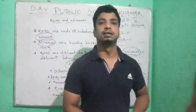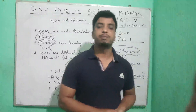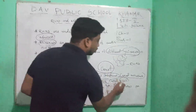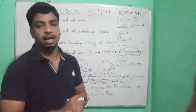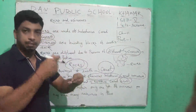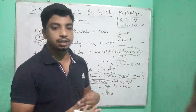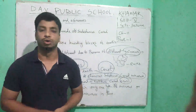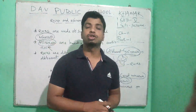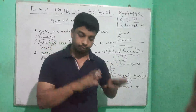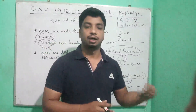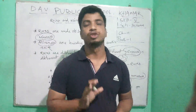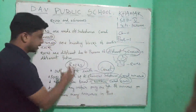Some rocks are made of one type of mineral, and many types of minerals can be present in one rock. Minerals found in a mixture are called ore. So if we get many minerals together, we call it ore. Rocks are also present in the ocean water.